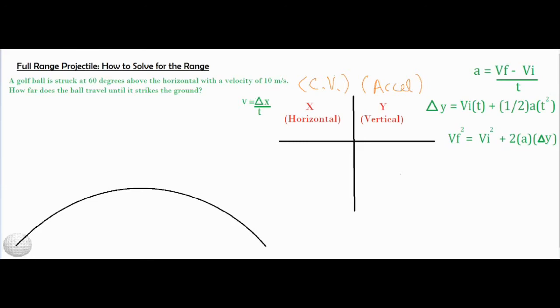Let's go ahead and label some of our variables that can fit into one of these two columns. I see the 10 meters per second, which is the initial velocity of the golf ball, and the 60 degree angle.